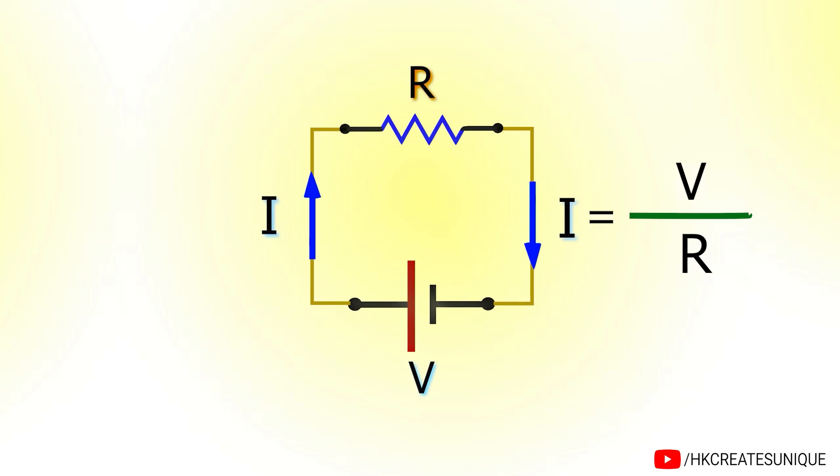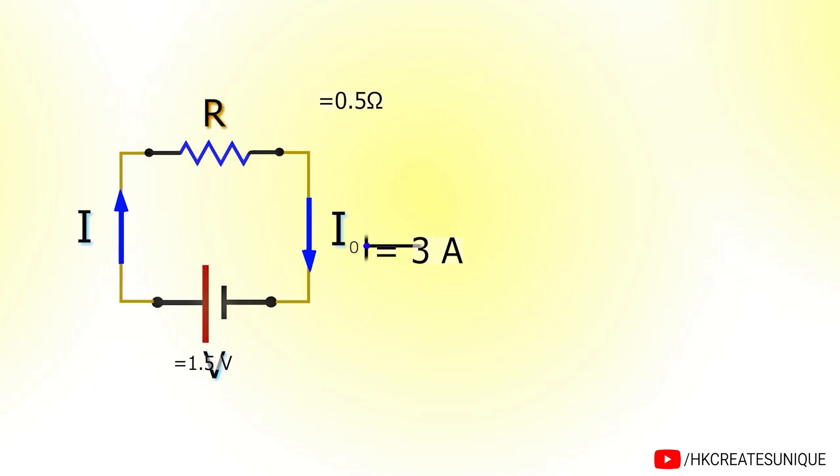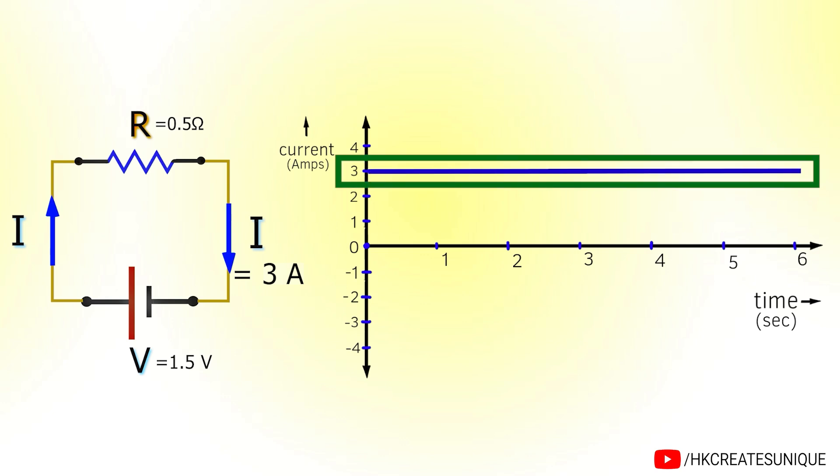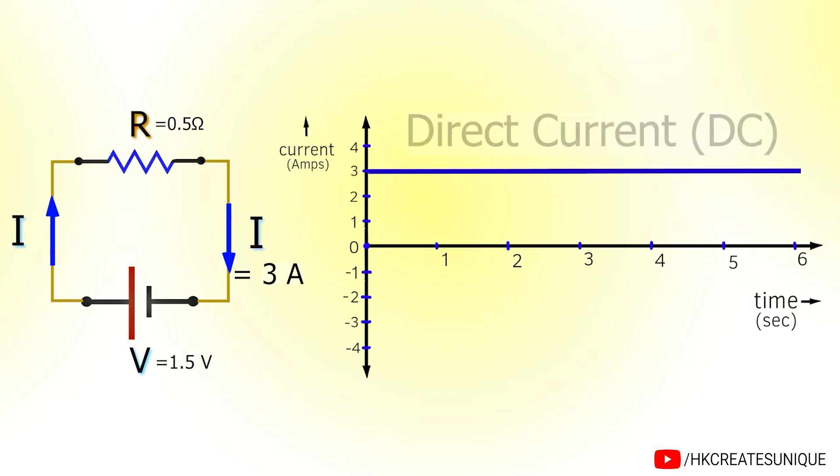So for a voltage of 1.5V and the load of resistance 0.5 Ohms, current will be 3A. It can be visualized in a graph. The x-axis represents time and the y-axis represents current. As you can see on the graph, the current remains constant at 3A. So this is called direct current.